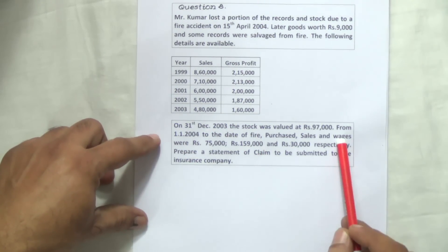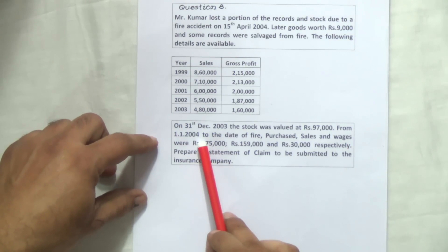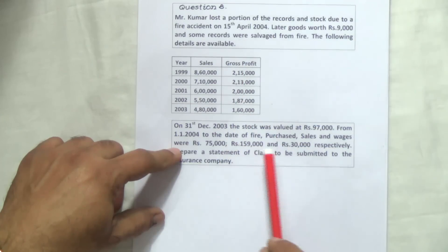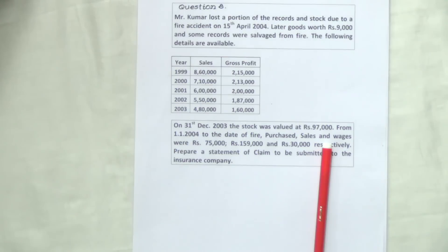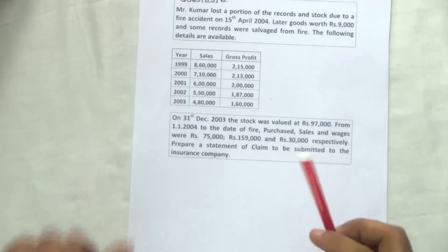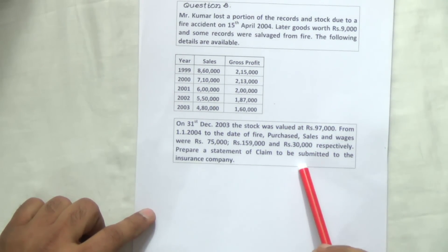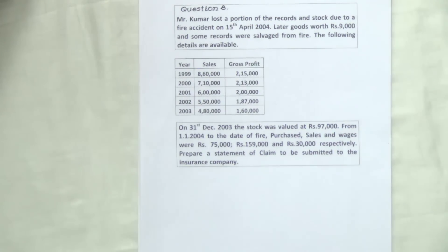We are given details to prepare the memorandum trading account — from the beginning of the financial year, 1st January 2004, to the date of fire, 15th April 2004. All transactions have been given in summary form. We are going to get the average GP ratio, use it, and then the closing balance of stock will be the balancing figure. Since no policy amount is given, that will be the claim amount. So let us start working out question number 8, step 1: calculation of GP ratio for each year.